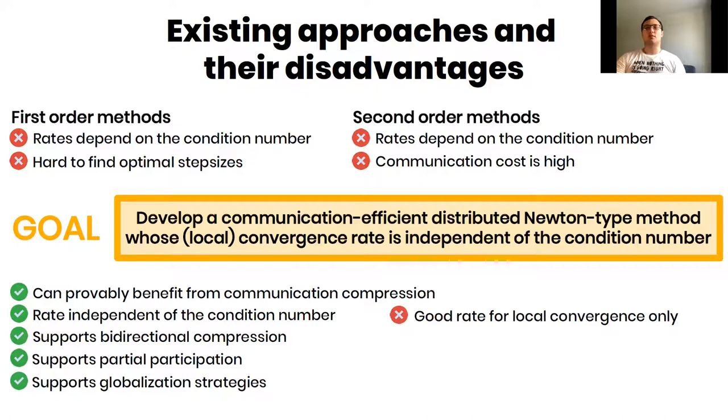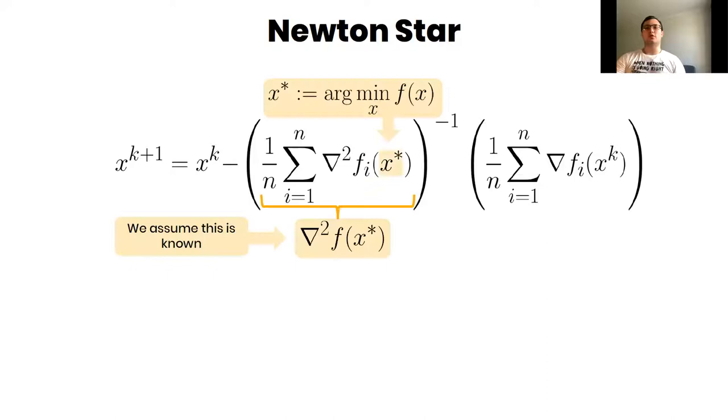But first, let's look at some modification of Newton's method, which we call Newton Star. The only difference with standard Newton method is that we use the Hessian at the optimum instead of the Hessian at current point.